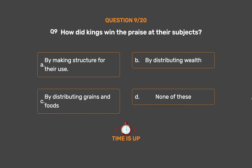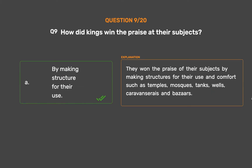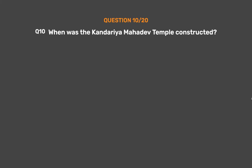The correct answer is Option A: By making structures for their use. They won the praise of their subjects by making structures for their use and comfort, such as temples, mosques, tanks, wells, caravansarais, and bazaars.